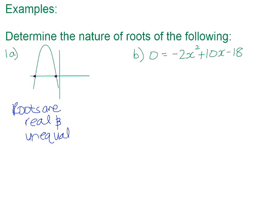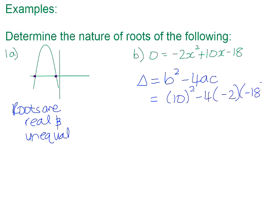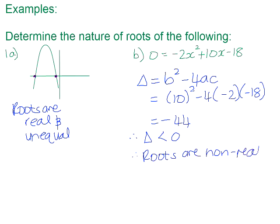In number B, they haven't given us a picture of the graph, so we need to find the value of the discriminant. The discriminant is the part of the quadratic equation under the square root sign — that will be 10 squared minus 4 times negative 2 times negative 18. If you punch that into your calculator, you get negative 44. Therefore, your discriminant is less than zero, and that means our roots are non-real.